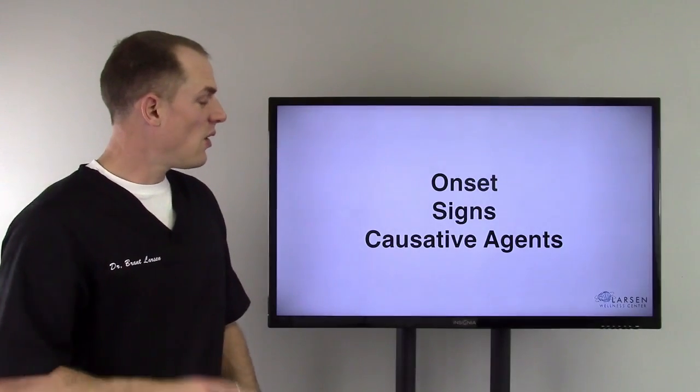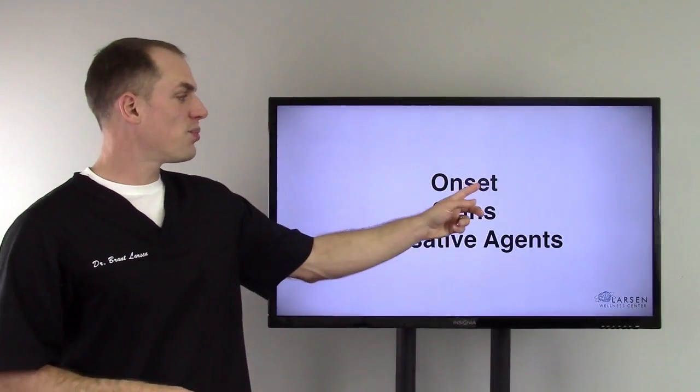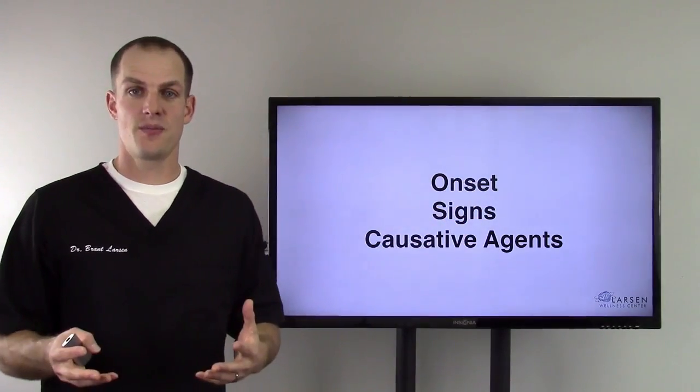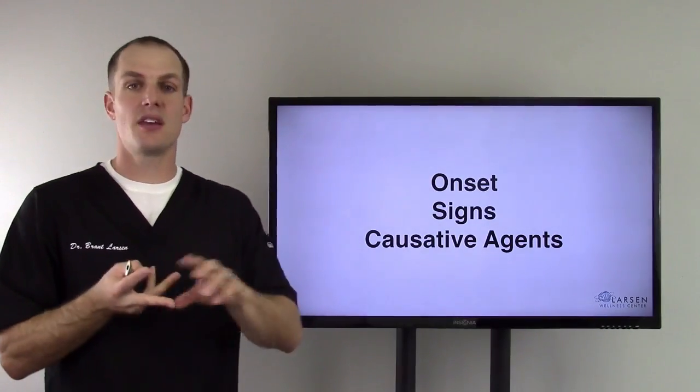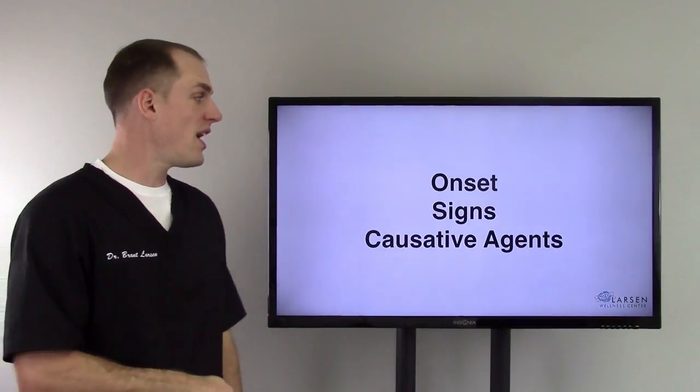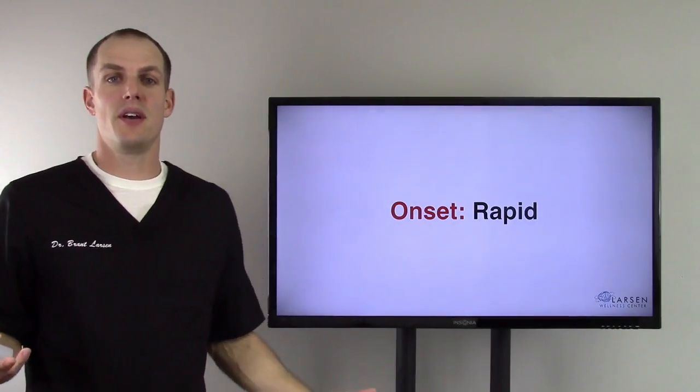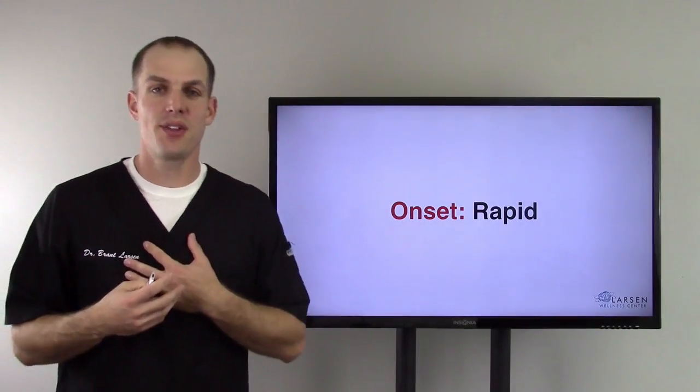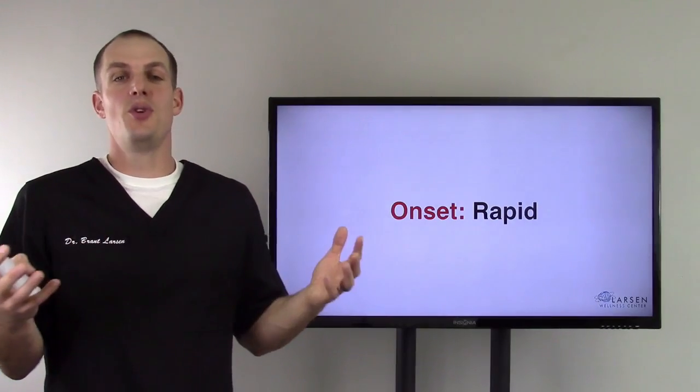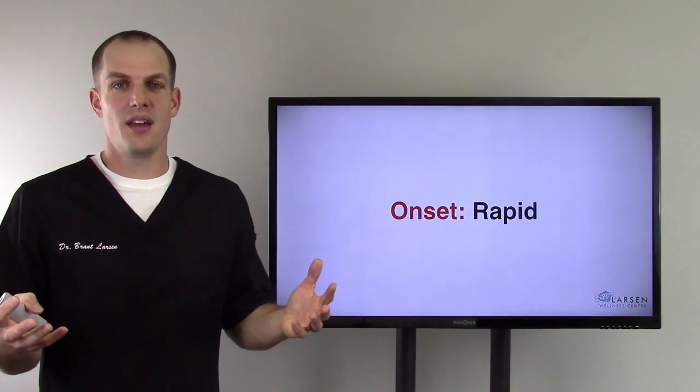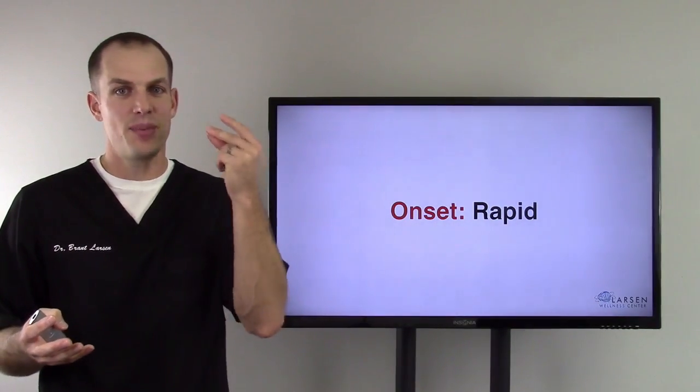Now first we have to talk about acute versus chronic. We want to break it down into three different categories: the onset, the signs, and the causative agents. We're going to do that with acute inflammation first. So the onset, it's rapid. It comes on quick. Well, I was an athlete, I sprained my ankles numerous times and you know what happens, right? It happens just like that.